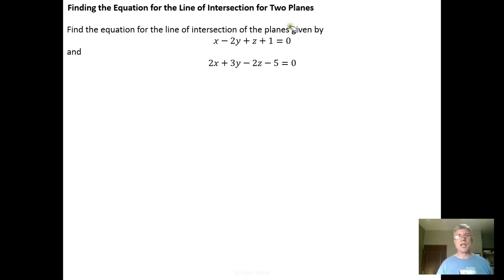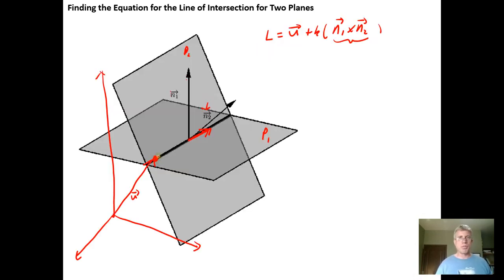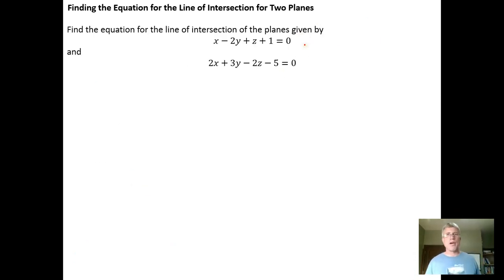So the problem says: find the equation of the line of intersection for these two planes. If the two planes intersect, we should be able to find a single point of intersection. The reason we want a single point is that once I have a point, I have the vector u from the origin to the line. The simplest way to find a point of intersection is to take one of the three variables x, y, z and set it equal to zero. In this case, I'm going to set z equal to zero.